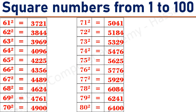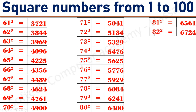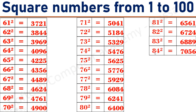80 square equals 6400. 81 square equals 6561. 82 square equals 6724. 83 square equals 6889. 84 square equals 7056. 85 square equals 7225.